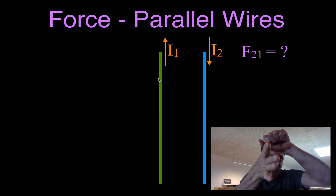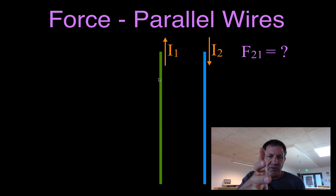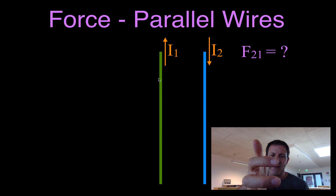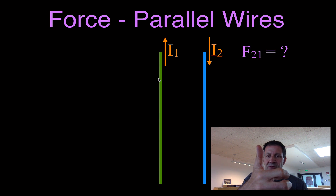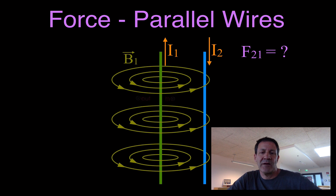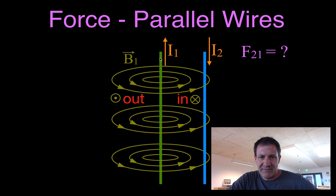You take your thumb, point it in the direction of the current, reach in and grab that wire, and your fingers wrap around — your fingers represent the magnetic field. The current moves up, so the magnetic field goes counterclockwise when viewed from the top. That means on the left-hand side of the wire it's coming out of the screen, and on the right-hand side it's going into the screen.